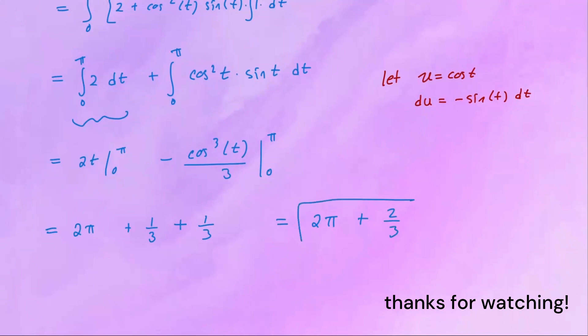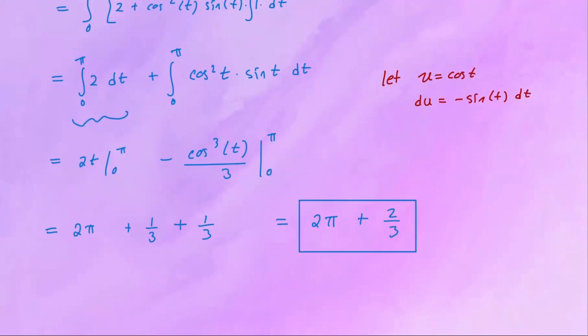Combining everything, the final answer is 2 pi plus 2 over 3. I hope you got the same answer. Take care, see you next time.